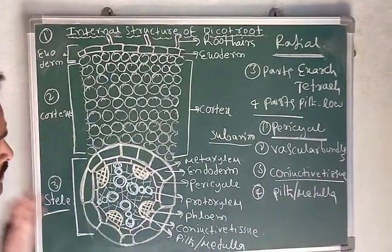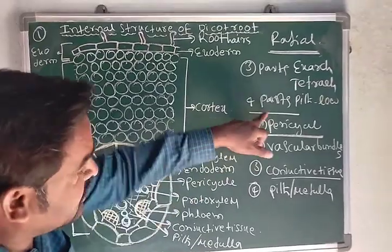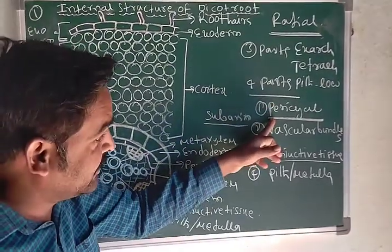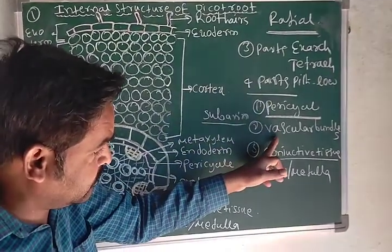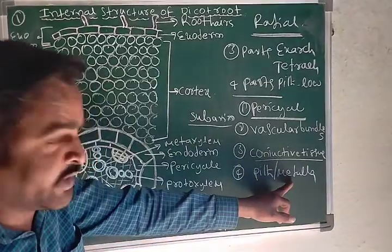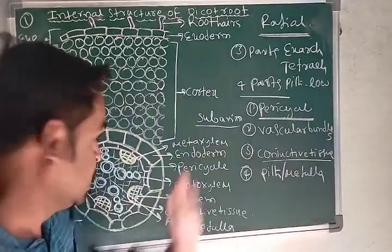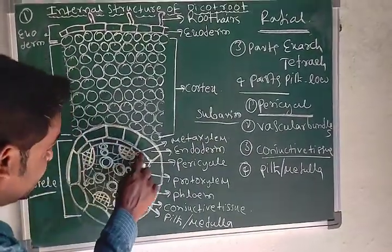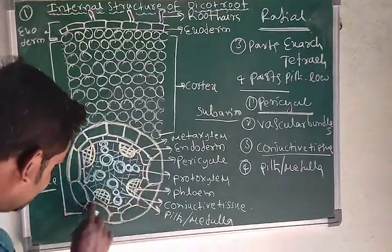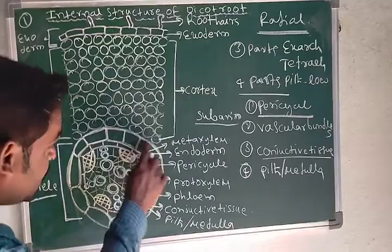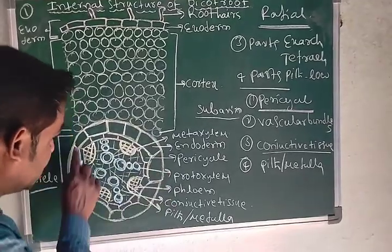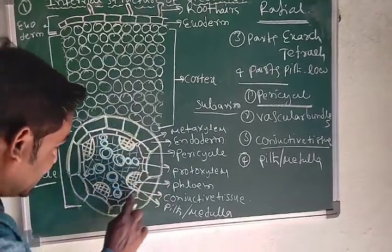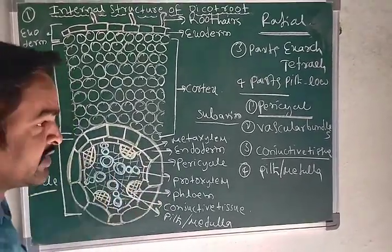The third part is the stele. The stele is mainly composed of four parts: pericycle, vascular bundle, conjunctive tissue, and pith or medulla. First, the pericycle is just below the endoderm — it is a single layer without intercellular spaces.